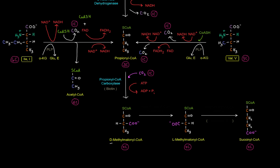And this D-methylmalonyl CoA is turned into L-methylmalonyl CoA, where this is basically just the stereoisomer, right? And that is done by methylmalonyl CoA racemase.